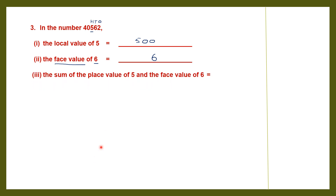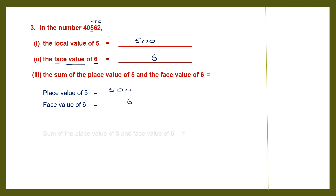Next: the sum of the place value of 5 and the face value of 6. We already found the place value of 5 to be 500, and the face value of 6 is 6 itself. We need to find the sum of both those numbers. So the place value of 5 is 500 and the face value of 6 is 6. So 500 plus 6 is 506. So this is our answer.